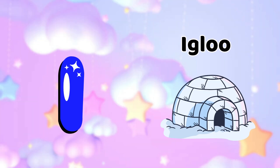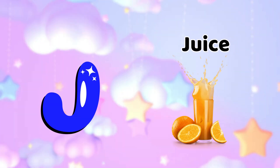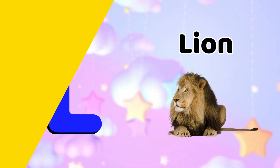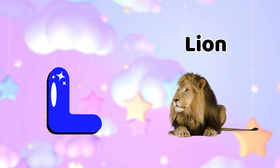I is for Igloo, e-e-Igloo. J is for Juice, ju-ju-ju. K is for Kangaroo, ka-ka Kangaroo. L is for Lion, Lion.